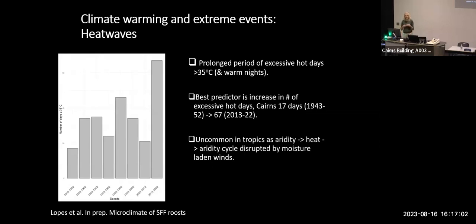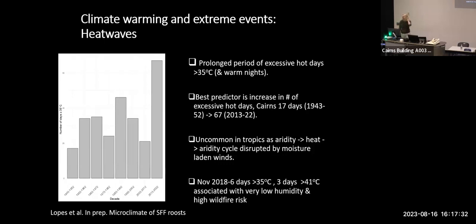Heatwaves are generally driven by aridity - as an area dries out it gets hotter, loses more soil moisture, and dries out further. What happens in the tropics is our moisture-laden winds disrupt that cycle, making heatwaves uncommon. Except we did get one: in November 2018 we had six days above 35 degrees Celsius, including three days above 41 degrees - almost 12 degrees above the November monthly average - also associated with very low humidity and high wildfire risk.